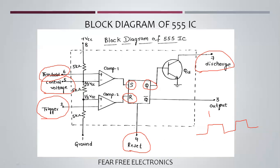The eighth pin is the power supply, VCC. The VCC supplies the potential divider with its three five-kilo-ohm resistors. The input power supply for the 555 IC ranges from 5V to 18V. This completes the block diagram of the 555 IC.